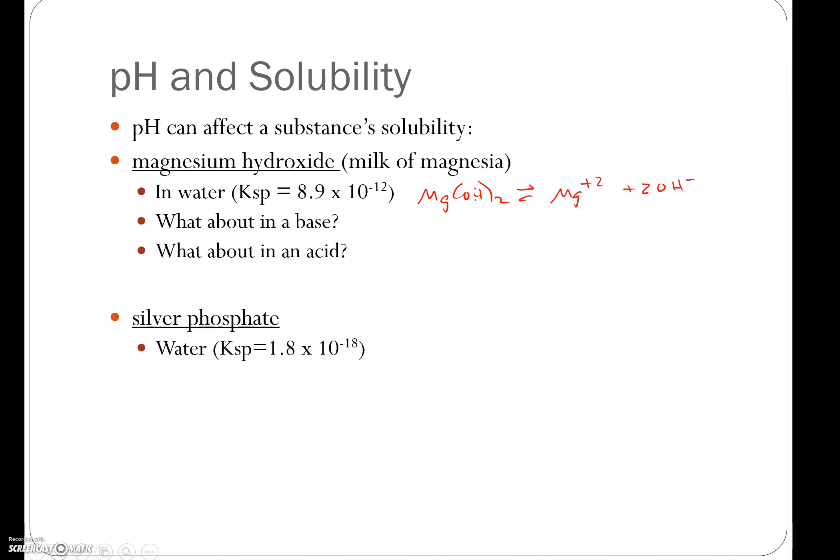And we'll write our dissociation. So we've got our silver phosphate breaking up into our silver ions and our phosphate ions.